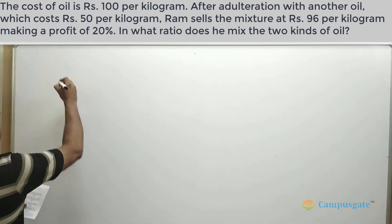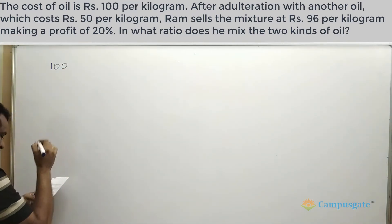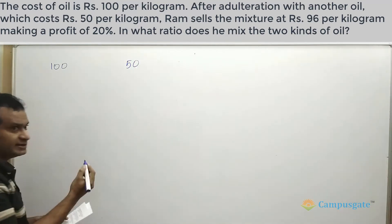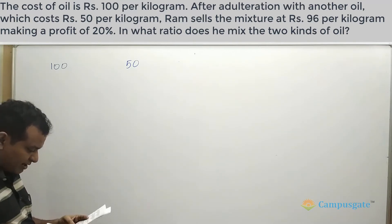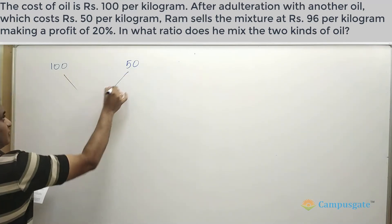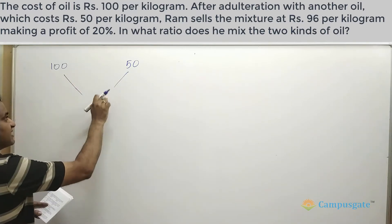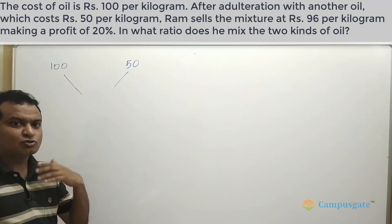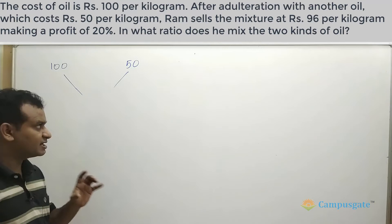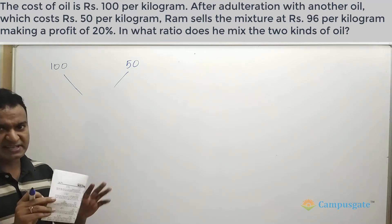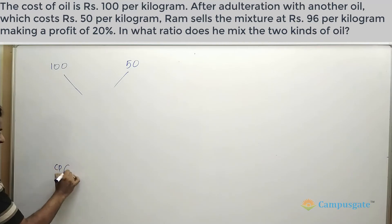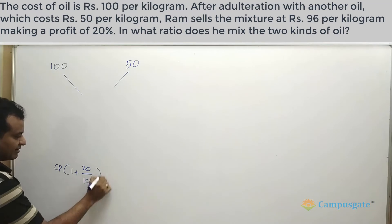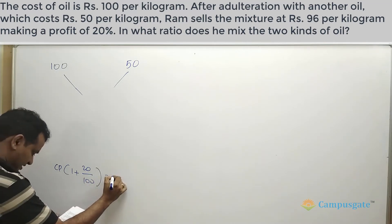In this question, the cost of the first oil is 100 rupees per kilogram and the cost of the second oil is 50 rupees per kilogram. After mixing these two, we need to find the cost price of the mixture. Since he sells the mixture at 96 rupees per kilogram making a profit of 20 percent, we need to find the cost price. We know that cost price multiplied by one plus profit percentage — which is 20 by 100 — equals the selling price, and SP is given as 96.